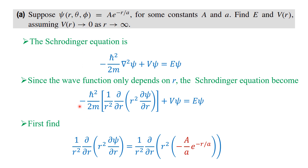So this reduces to: minus h-cross squared over 2m, times 1 over r² times the partial derivative d/dr of r² times (∂ψ/∂r), plus V·psi equals E·psi. Now we will calculate the term in square brackets, that is (1/r²)(∂/∂r)(r²·∂ψ/∂r).